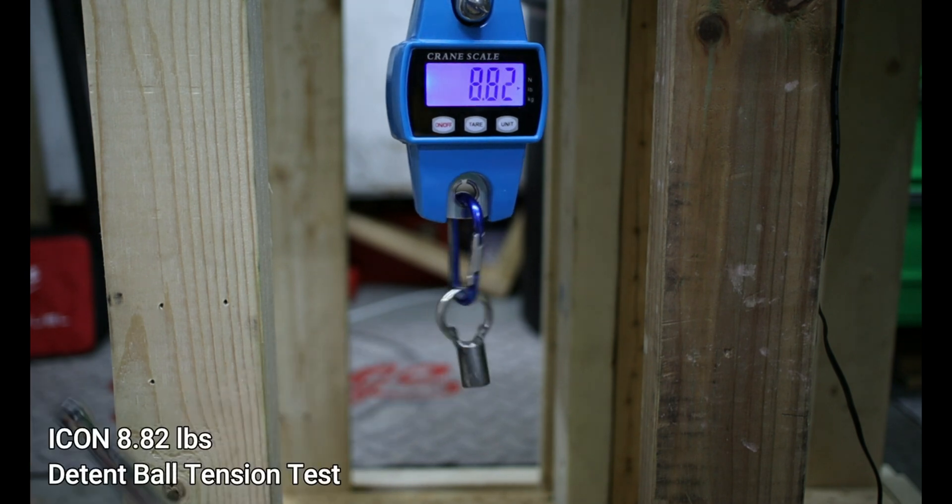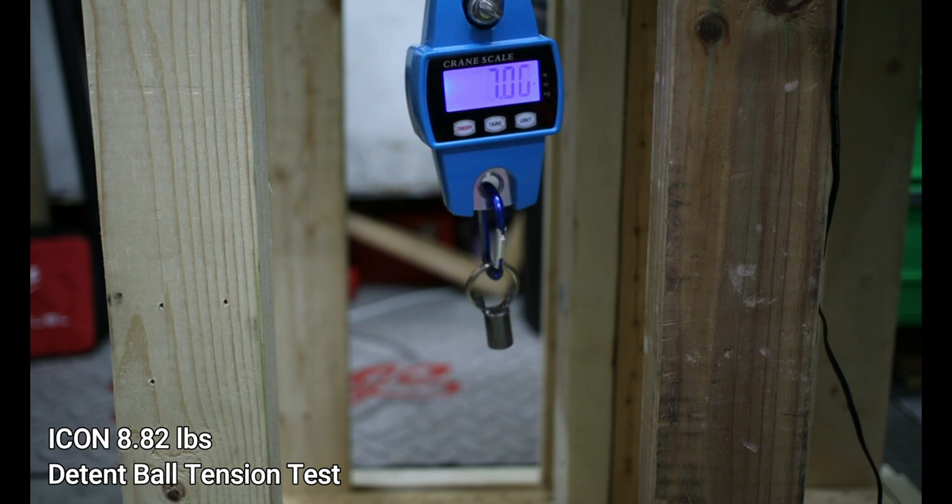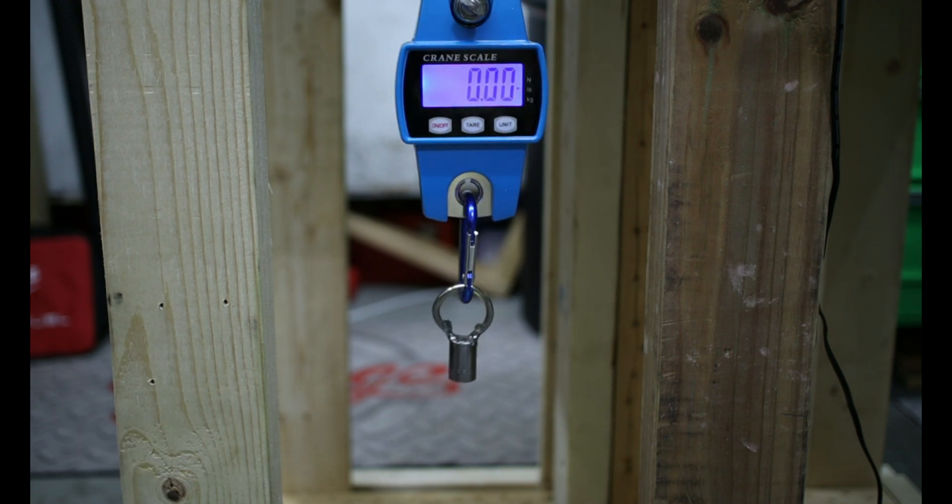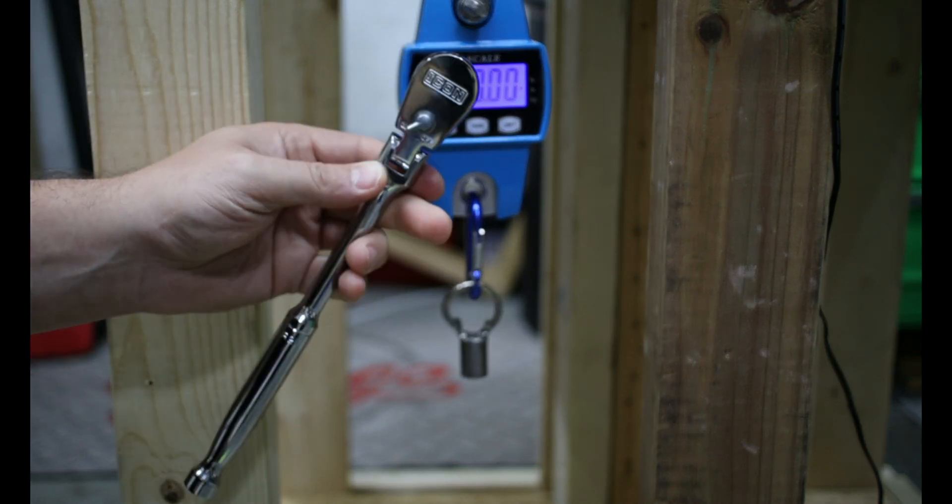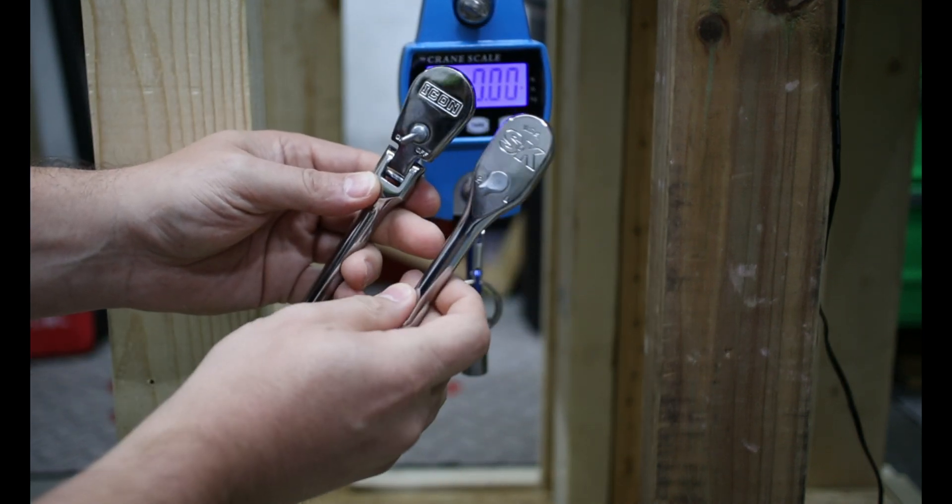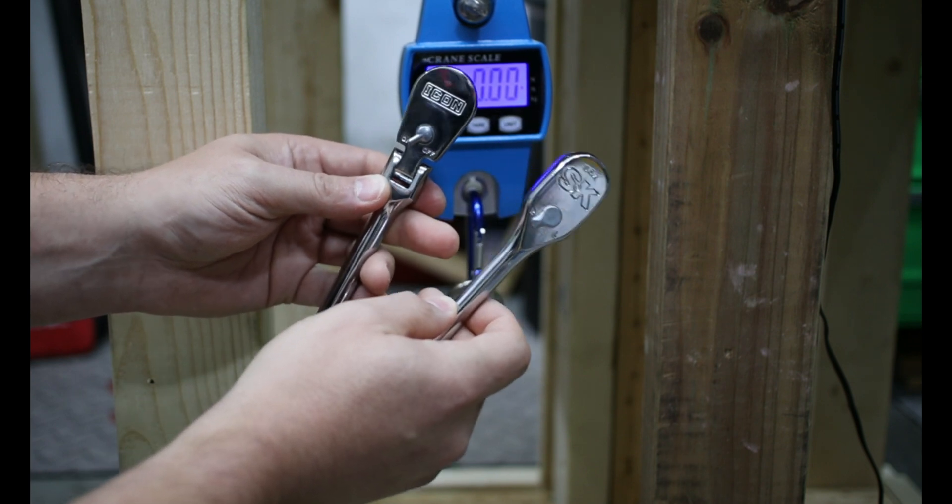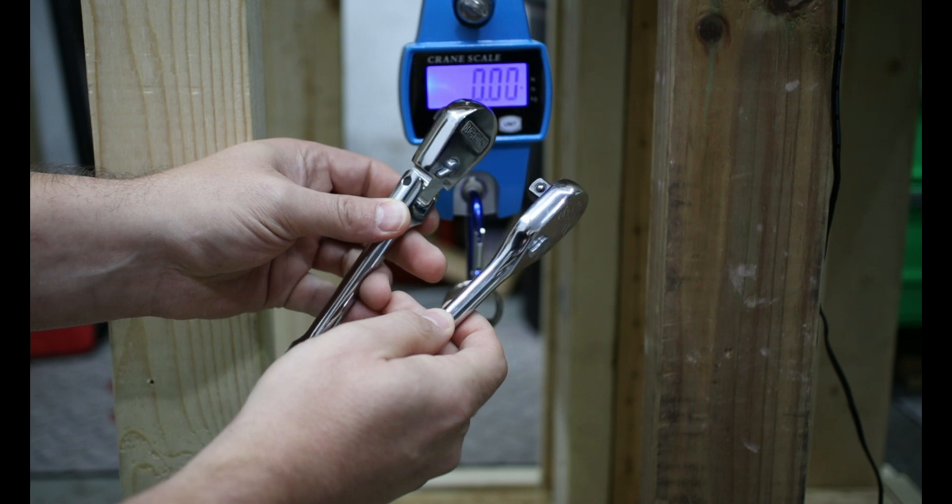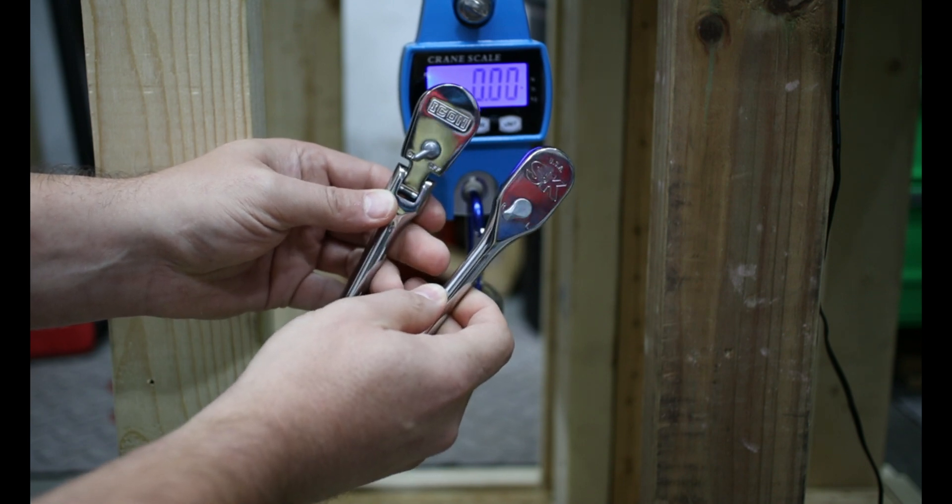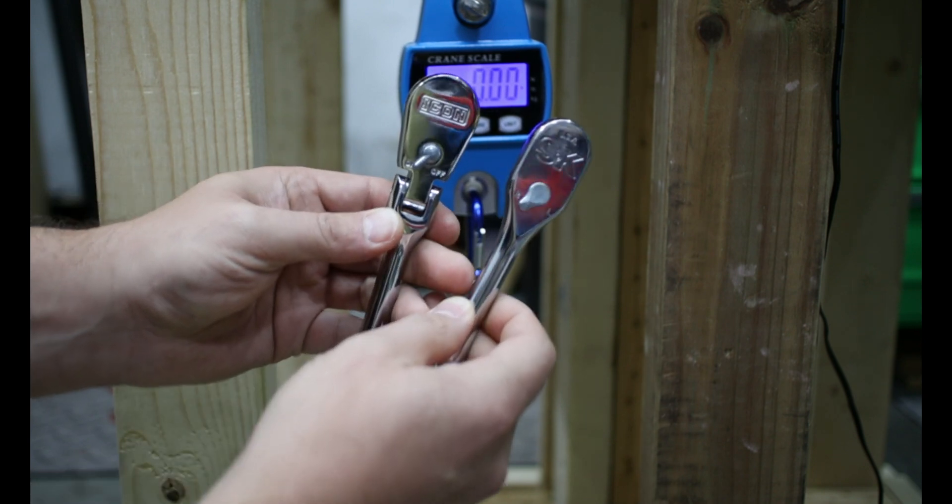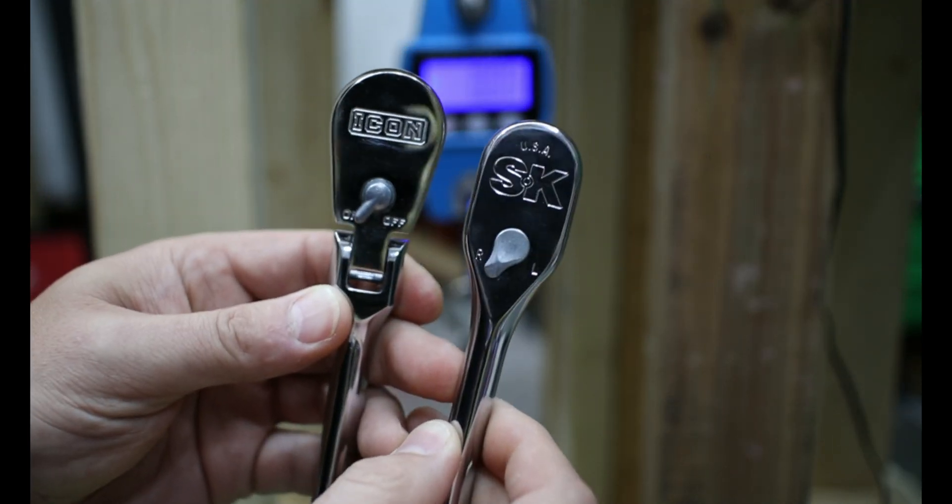The Harbor Freight icon took roughly 8.82 pounds of force to have the socket be removed from the ball detent. Now this isn't necessarily a good thing, it's not necessarily a bad thing, it's just information to help arm you should you want your socket to be easier to remove or more difficult. Say it binds up on a nut or a fastener and you don't want it to remove from the ratchet itself, you might want to pick one that has more force. The choice is really up to you.